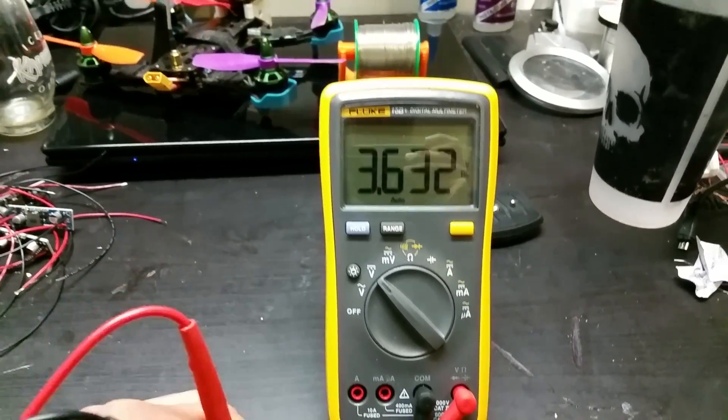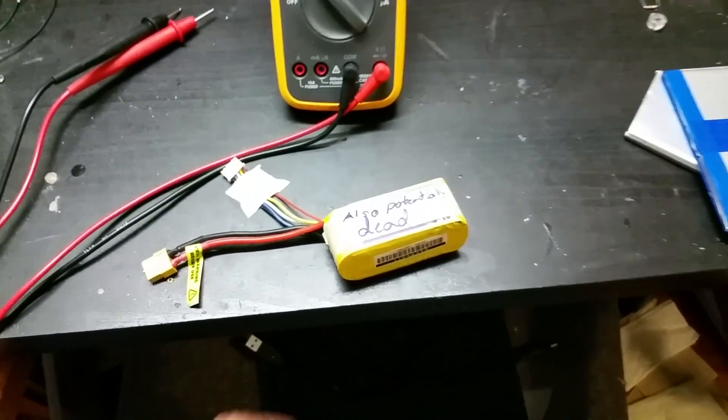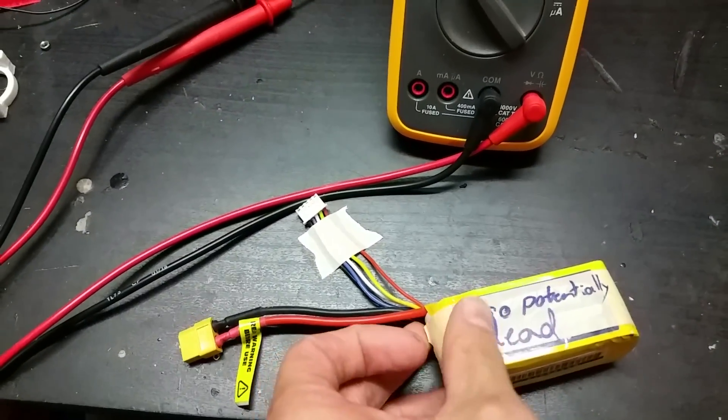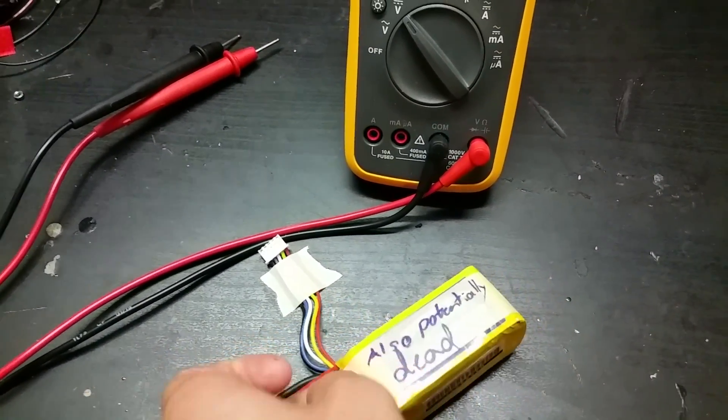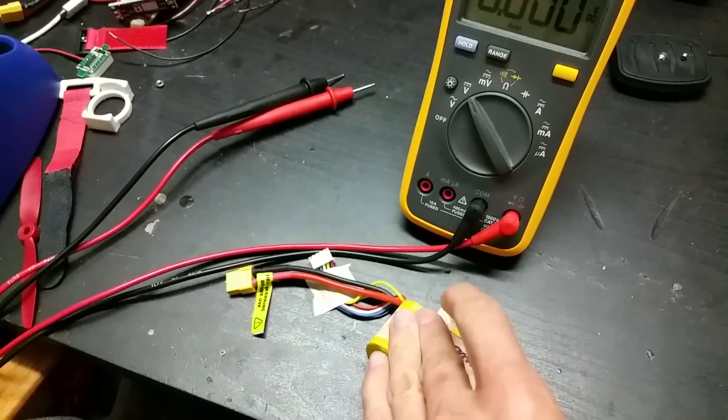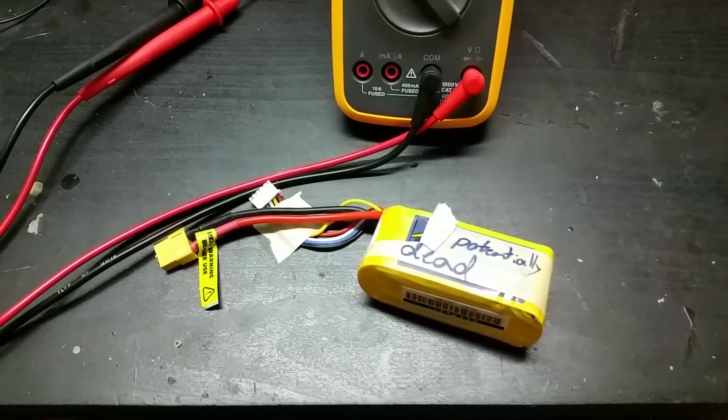And this last cell is also 3.6. So it looks like this battery has been fully recovered. I can finally take this sticker off of it. And it looks like I have another pack to add back to my arsenal again.